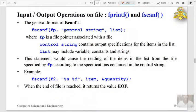Here all these data are not sent to monitor, all these information are passed to a file that is associated with this file pointer. The general format of fscanf is fscanf fp, control string, list, where fp is a file pointer associated with a file. Control string contains output specifications for the items in the list. List may include variables, constants and strings.